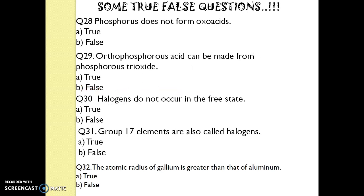Here are some true-false questions. Question 28. Phosphorus does not form oxoacids — is it true or false? It is a false statement. Question 29. Orthophosphorous acid can be made from phosphorus trioxide — true or false? The answer is true. Question 30. Halogens do not occur in the free state — is it true? Yes, it is true.